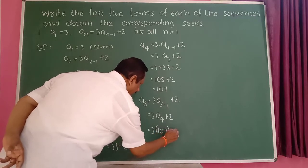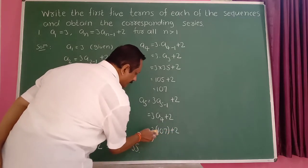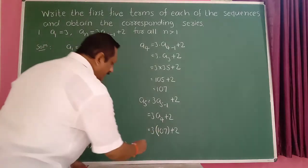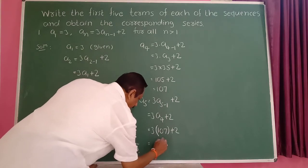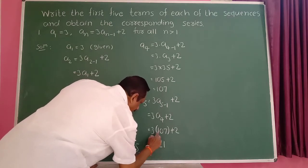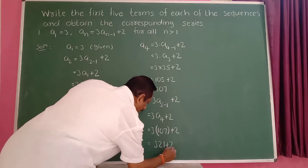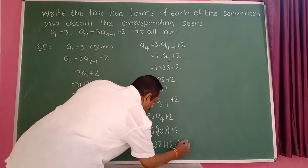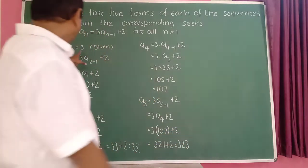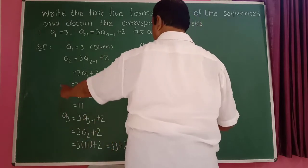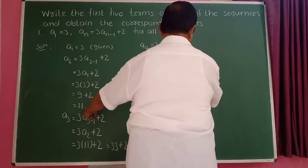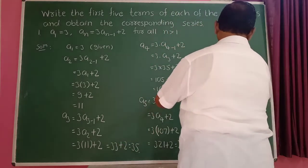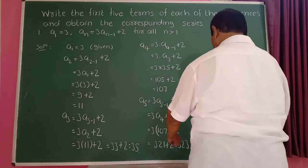For a_5, put n equal to 5. A_5 is equal to 3 into a_4 plus 2. The a_4 value is 107. So 3 into 107 plus 2. 7 into 3 is 21, and 3 ones are 3, giving 321 plus 2 equals 323. So the 5th term is 323.